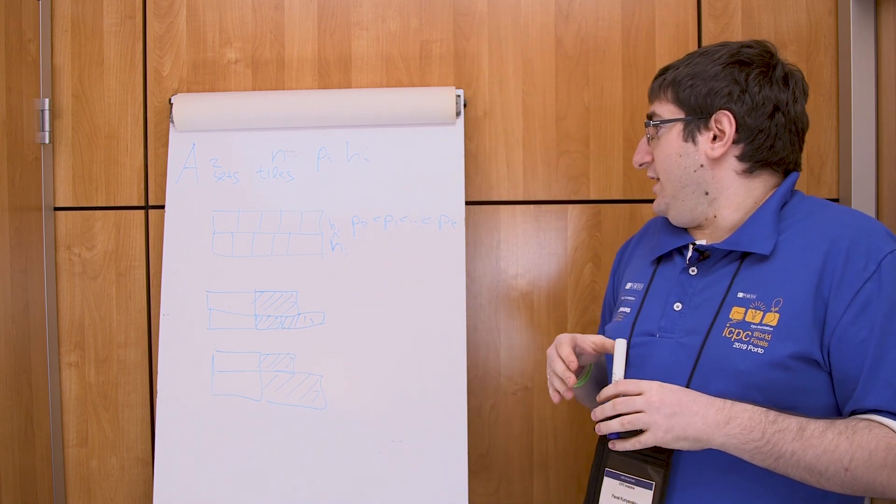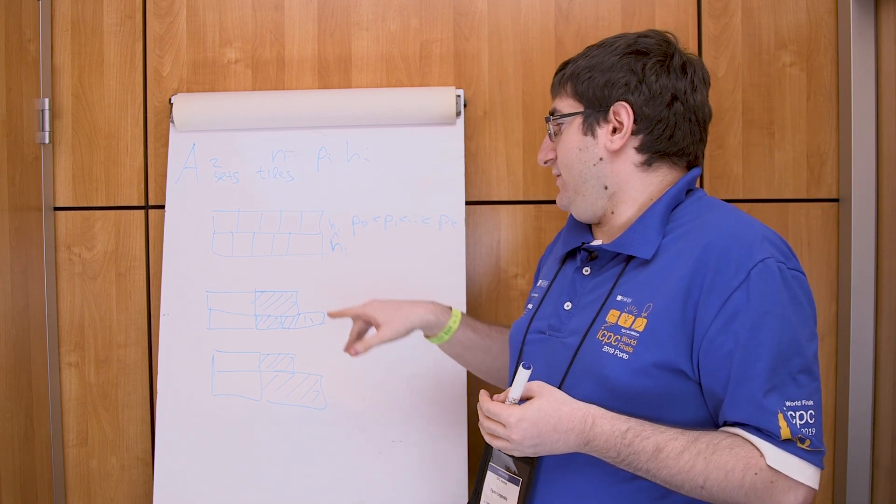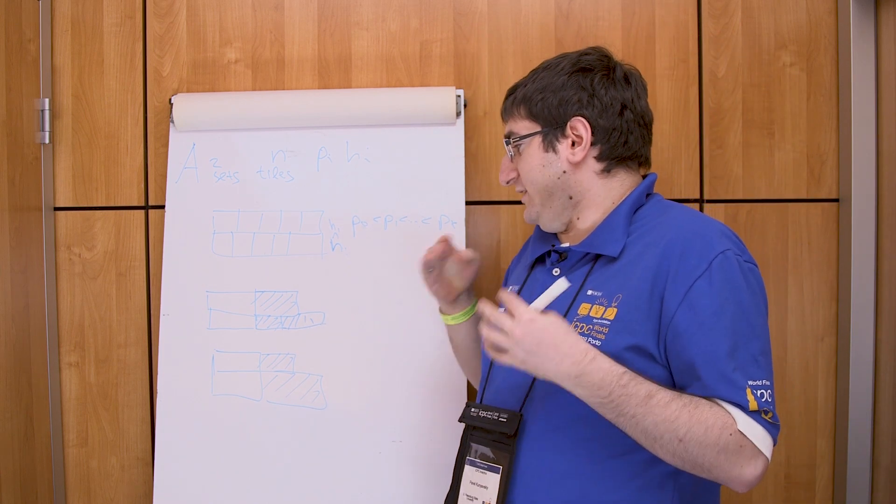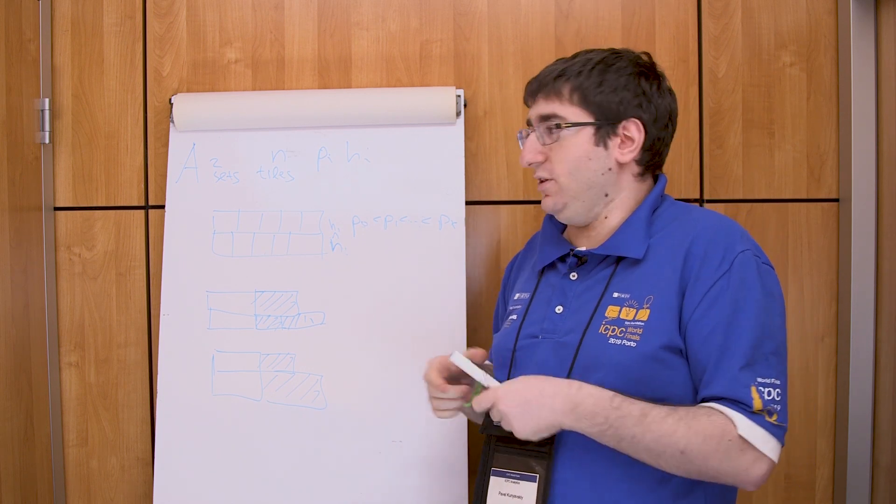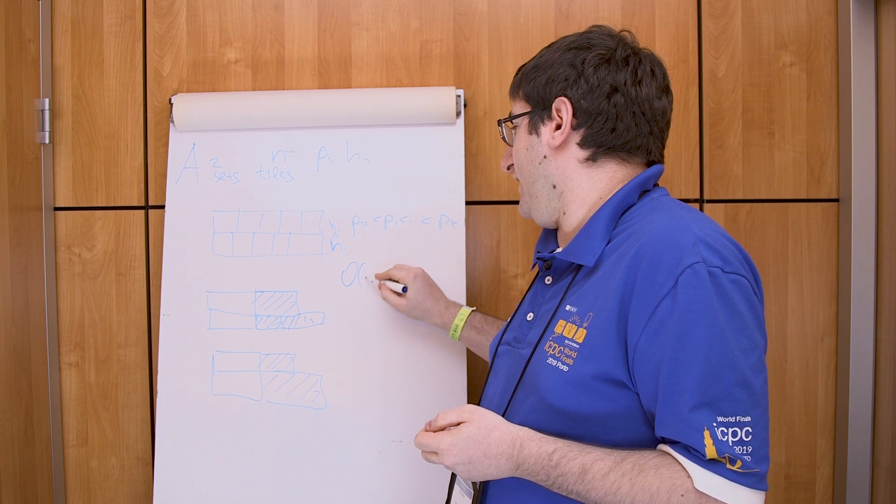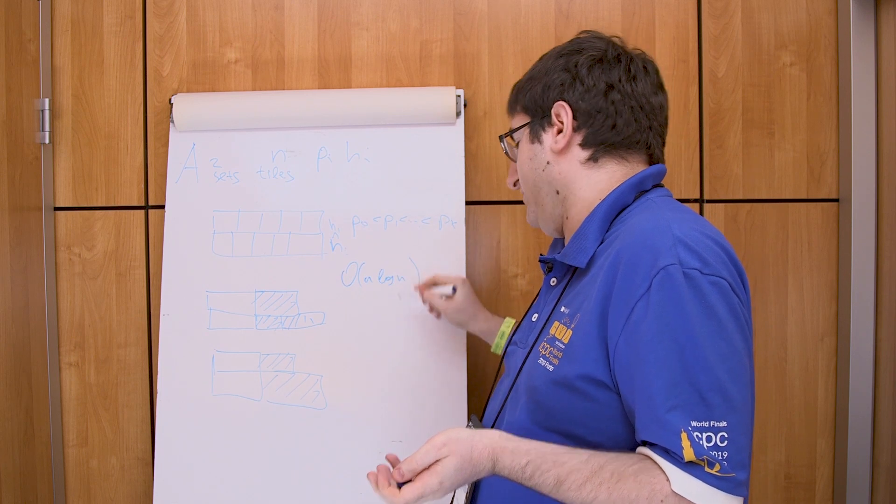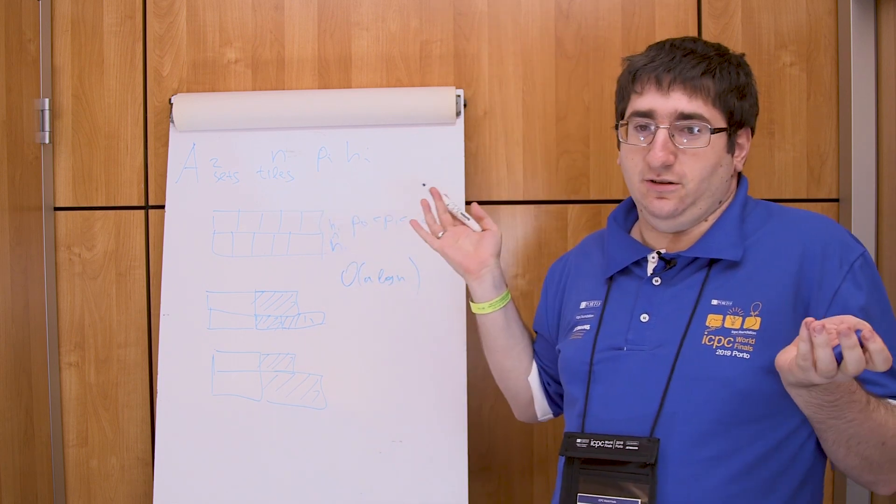So the main idea of solution: we give prefix which is smaller, fix it, fix other one and go into the next step. This all can be done in n log n time which is fast enough for this problem. So that's all.